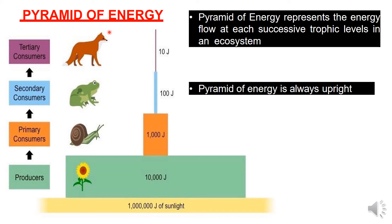Next is the pyramid of energy. The pyramid of energy represents the energy flow at each successive trophic level in an ecosystem. This follows the 10 percent law — from producer to top consumer, over each trophic level, the energy level decreases. The pyramid of energy is always upright in every ecosystem.